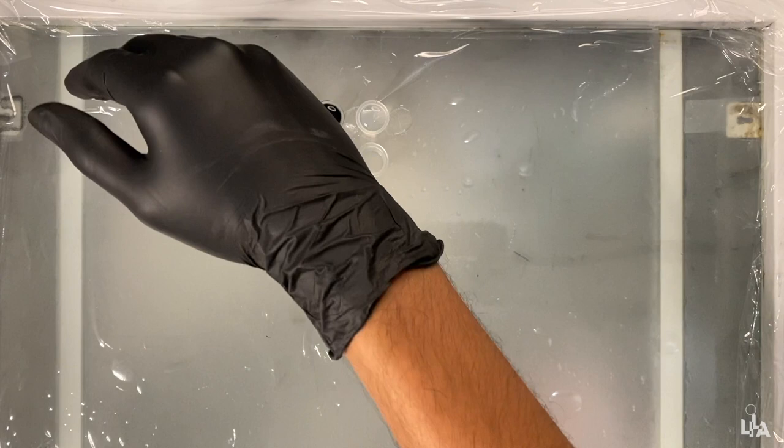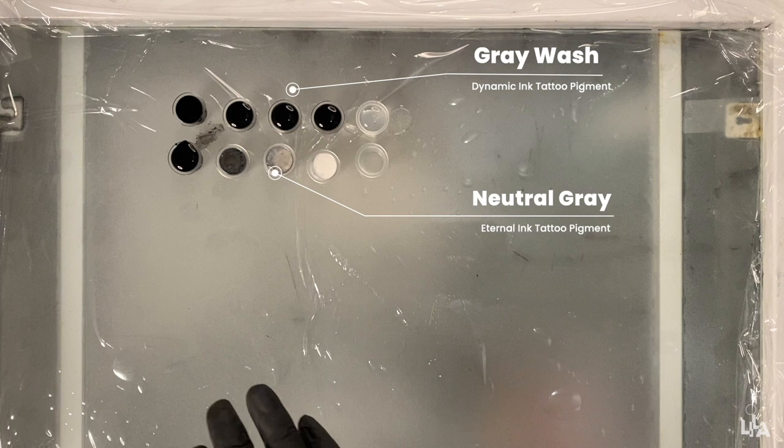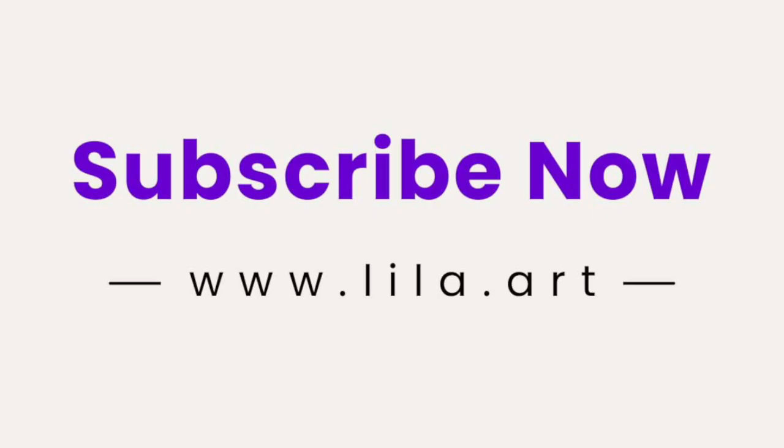So that's it, that's my gray wash and this is my neutral gray set. So this is what I use in all my cover-up tattoos. Nothing different than this. Now let me explain you about the equipment that I'm gonna use while tattooing.